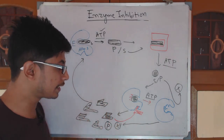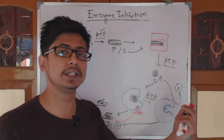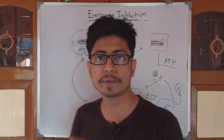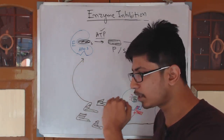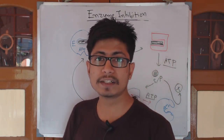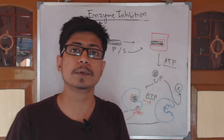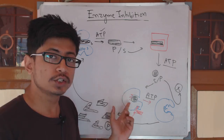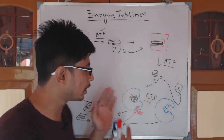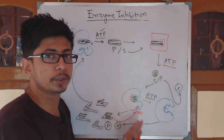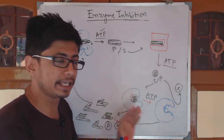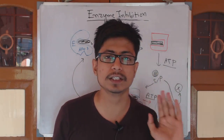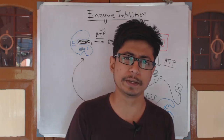Another reason for feedback inhibition is toxicity: a product may be less toxic at a specific concentration, but if its concentration increases it becomes toxic to the cell. In that condition, the accumulated product will act to prevent itself from being produced further.